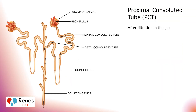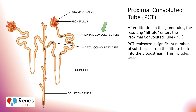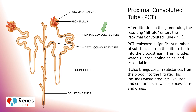After filtration in the glomerulus, the resulting filtrate enters the proximal convoluted tube, or PCT. The PCT reabsorbs a significant number of substances from the filtrate back into the bloodstream — this includes water, glucose, amino acids, and essential ions. It also brings certain substances from the blood into the filtrate, including waste products like urea and creatinine, as well as excess ions and drugs.